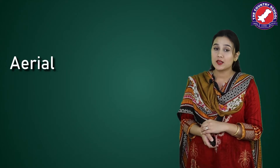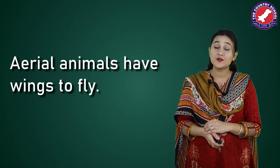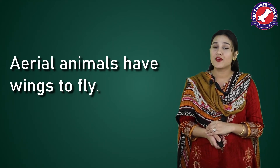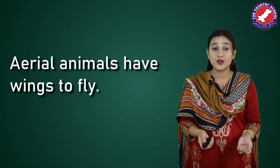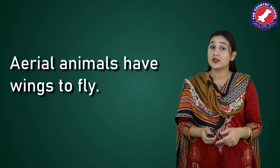I will tell you about it later. Aerial animals have wings to fly. They have very strong muscles which help them to move their wings. Another feature is that they are very lightweight — they have hollow bones. They have hollow bones so they are very lightweight, and that also helps them to fly, because if they were heavy it would have been very difficult to fly.